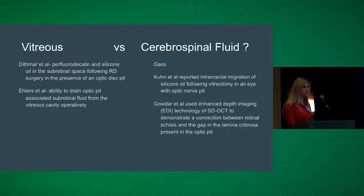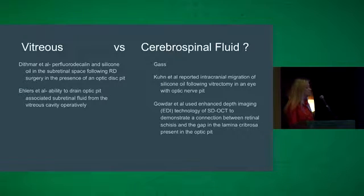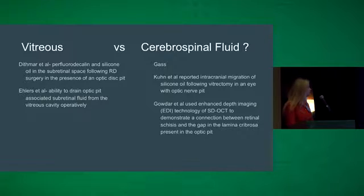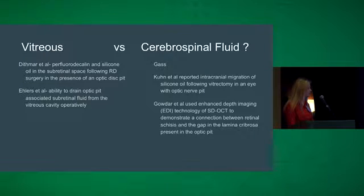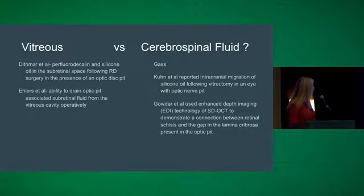Proponents for CSF as the source include Gass, who in 1969 examined histopathologic sections from two eyes removed due to an incorrect diagnosis of malignant melanoma. He found that the optic pits protruded back through a defect in the lamina cribrosa into the subarachnoid space, which was distended, and was separated from the subretinal space by only a very thin septum. Kuhn reported intracranial migration of silicone oil following vitrectomy in an eye with an optic nerve pit. Most recently, Gouter used enhanced depth imaging with spectral domain OCT to demonstrate the connection between retinal schesis and the gap in the lamina cribrosa present in the optic pit.